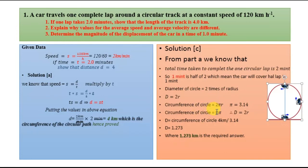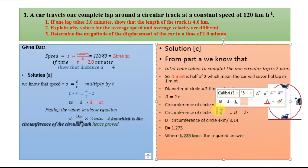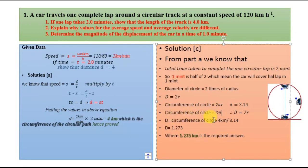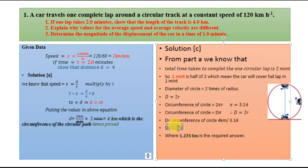The circumference of the circle equals two pi r, and also equals pi times the diameter d. The circumference is the complete distance traveled by the car, which we found in part A to be four kilometers. Putting this value into the equation: diameter equals circumference divided by pi, which equals four divided by pi. This gives the displacement covered by the car in one minute as 1.273 kilometers. That is the required answer and the end of question number one.